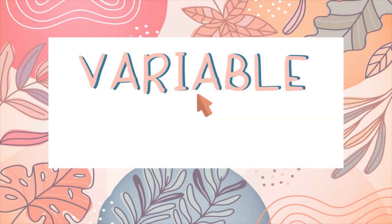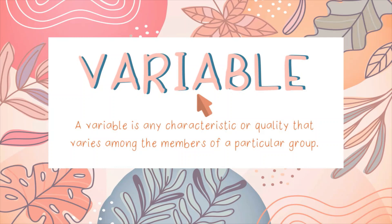But what is a variable? A variable is a concept — a noun that stands for variation within a class of objects, such as chair, gender, eye color, achievement, motivation, or running speed. A variable is any characteristic or quality that varies among the members of a particular group. Notice that the individual members in the class of objects must differ or vary to qualify the class as a variable.